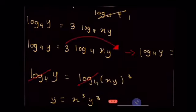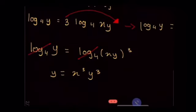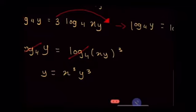Seterusnya, 3 log XY asas 4 tu, 3 tu kita perlu pindahkan ke belakang, akan jadi kuasa 3. Maka hasilnya akan jadi log Y asas 4 sama dengan log XY kuasa 3 asas 4. Apabila log sama kita boleh potong, jadi yang tinggal Y sama dengan X kuasa 3 Y kuasa 3.